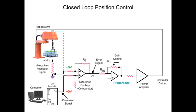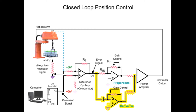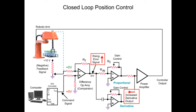To achieve a fast response time and minimize overshoot of the desired position, a derivative amplifier is added to the circuit. The derivative amplifier produces an output while the signal applied to its input is changing. As the arm lags behind the command signal, the error signal causes the derivative amplifier to produce a voltage that adds to the output of the proportional amplifier. The sum of both voltages is applied to the power amp, causing the robotic arm to accelerate at a similar rate to the changing command signal.